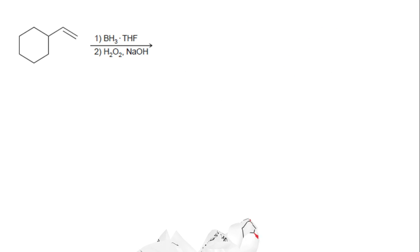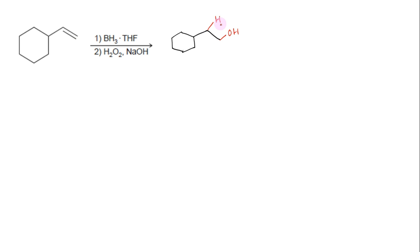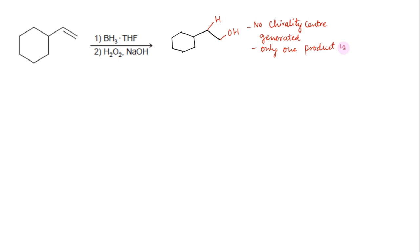Consider this reaction. The reagents indicate hydroboration-oxidation. The net result of this two-step process is the anti-Markovnikov's addition of H and OH across the pi bond — that is, OH is to be placed at the less substituted carbon and H on the more substituted carbon. In doing so, no chirality centers are generated, so the requirement for syn addition is irrelevant, and only one product is formed.